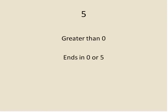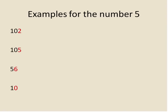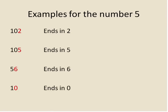5 is kind of easy — this is nice. The number has to be greater than 0, and then it ends with a 0 or a 5. So anything greater than 0 that ends in 0 or 5 is going to have a factor of 5. Looking at examples: we check the digit in the ones column. 102 ends in 2, so 5 is not a factor. 105 ends in 5, so 5 is a factor. 56 ends in 6, so 5 is not a factor. 10 ends in 0, so 5 is a factor of 10. This works for as large a number as you want.